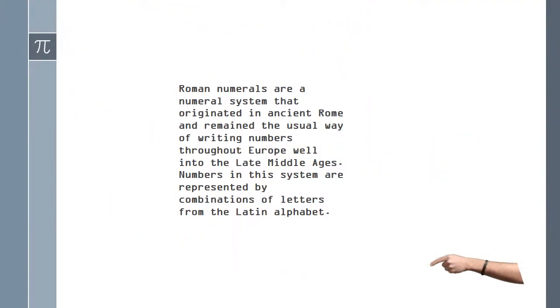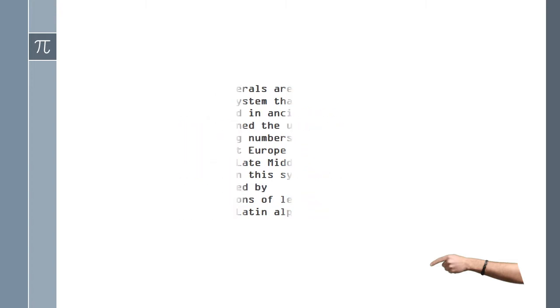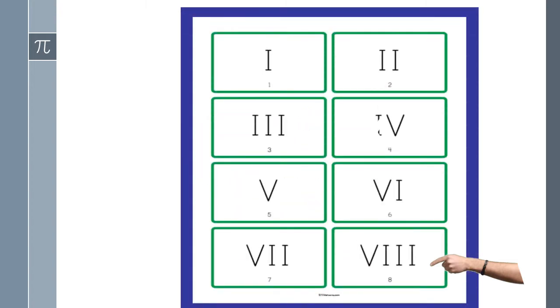The system that originated in ancient Rome and remained the usual way of writing numbers throughout Europe well into the late Middle Ages. Numbers in the system are represented by combinations of letters from the Latin alphabet. These are the 1 to 10 Roman numerals.